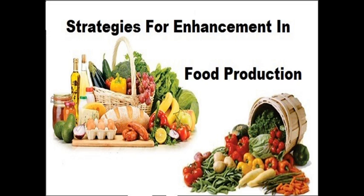In this chapter, children, we are going to discuss various kinds of strategies for the enhancement in food production, such as animal husbandry — which means dairy, poultry farm management, dairy farm management — and then fish culture, fisheries. These strategies focus on food production because animals play a key role in enhancing food supply.